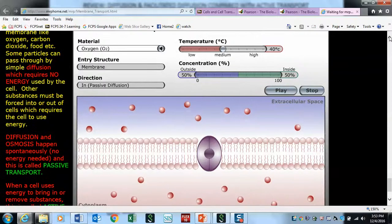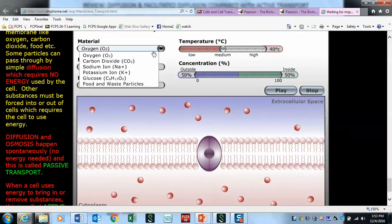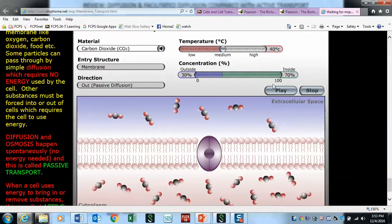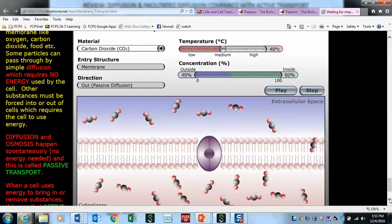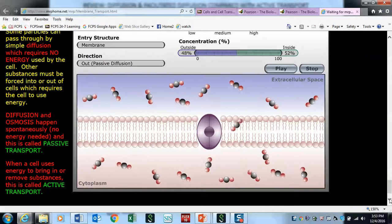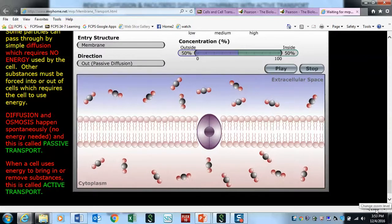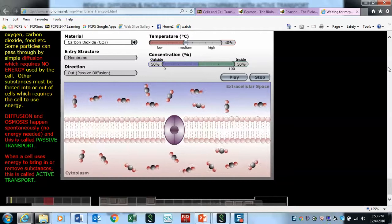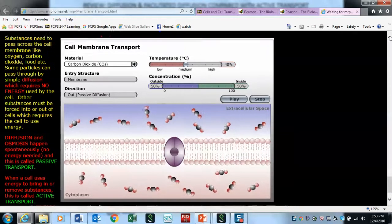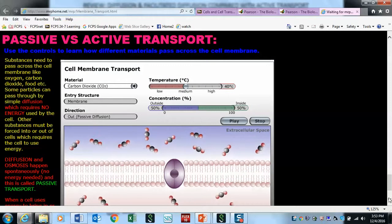Let's look at carbon dioxide. There's more inside than there is outside. Hit play. The carbon dioxide is going to flow out until it reaches equilibrium. I'm going to shrink this down to 125% so I don't have to keep scrolling.